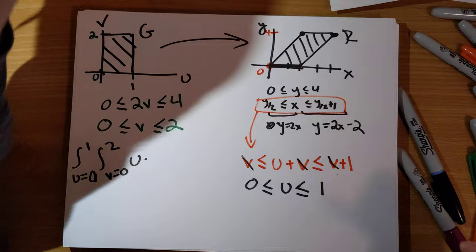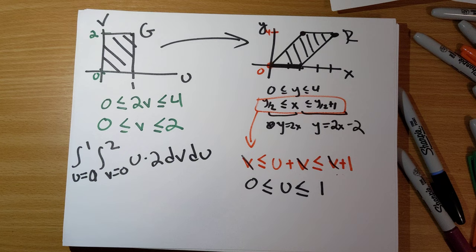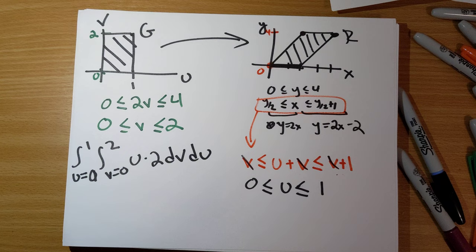dV dU. And so, we have this pretty straightforward double integral. If you crunch it out, it isn't too difficult. You get 2 here.